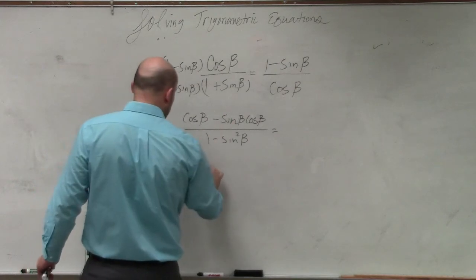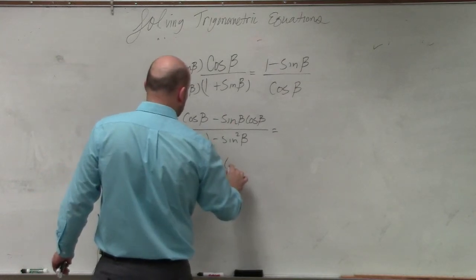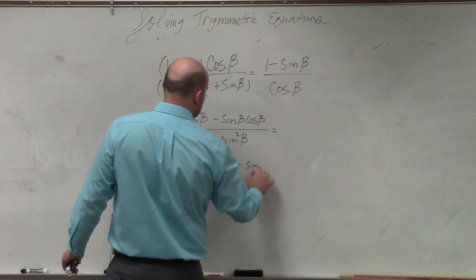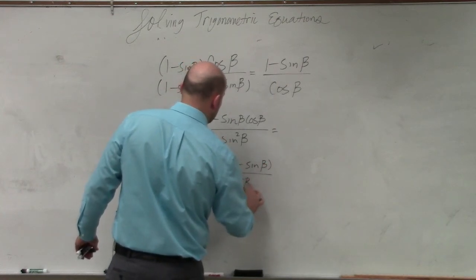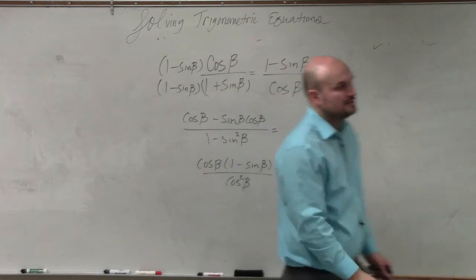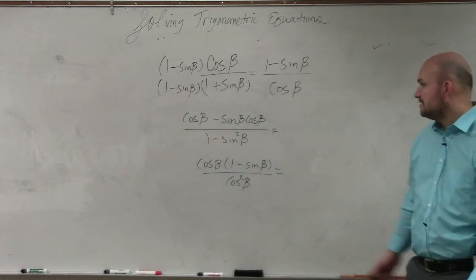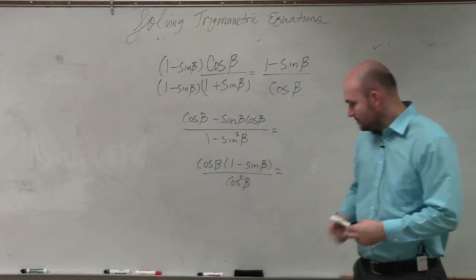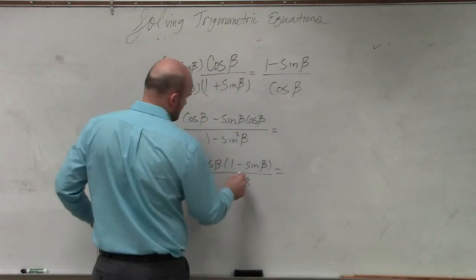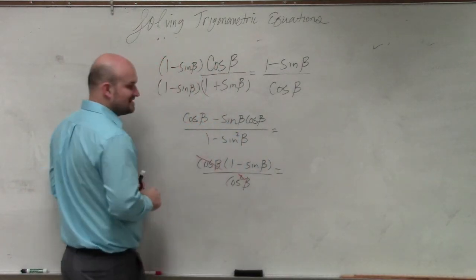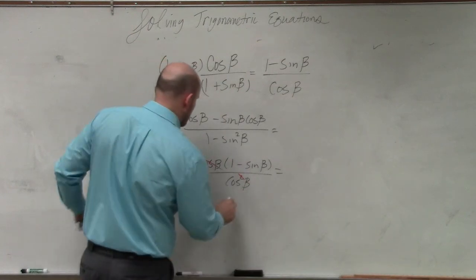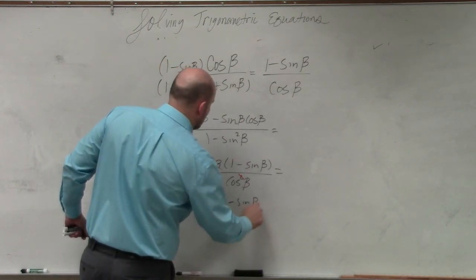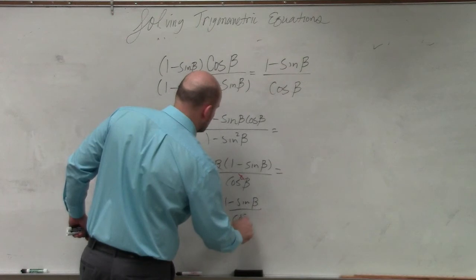I can factor out a cosine in the numerator, cosine of beta, 1 minus sine of beta, all over cosine squared of beta. Now do you see that a cosine divides out? And I'm just left with 1 minus sine of beta over cosine of beta.